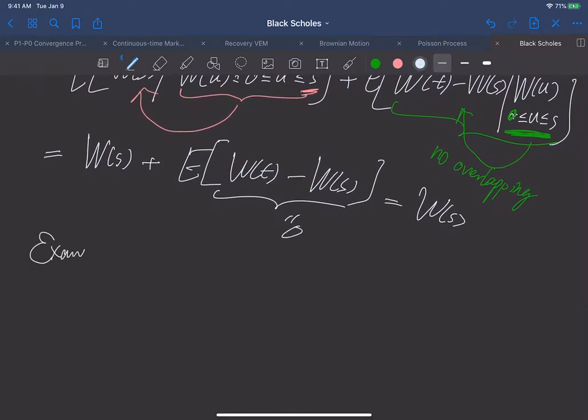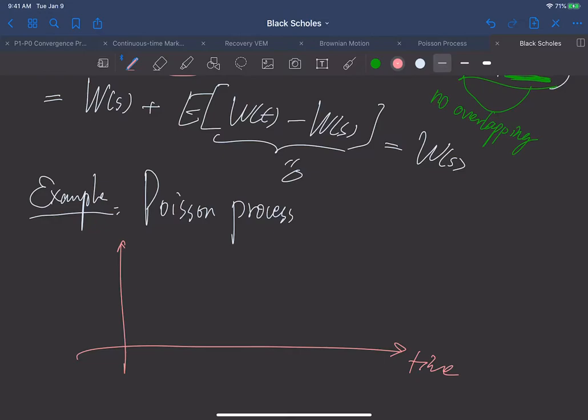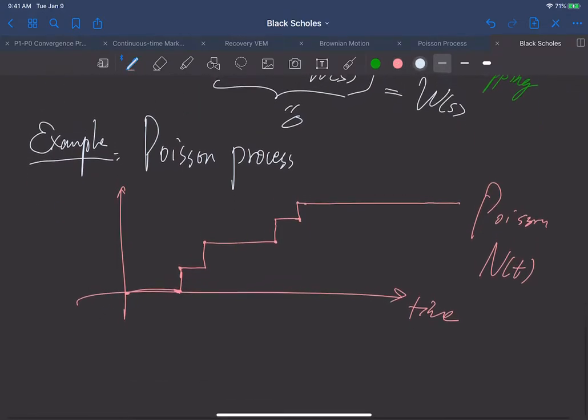The other example I want to give is Poisson process. Poisson process doesn't sound like a martingale because Poisson process generally has a trend of going up. Poisson process is something like this: it remains zero for a while, then we have our first arrival and it becomes one, then it remains one for some time and jumps to two, may jump to three at some time, may jump to four, may jump to five even shorter, but then may remain and jump to six for a long time. This is our Poisson process N(t), a counting process. It generally goes up, so it's not a martingale.